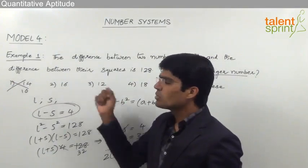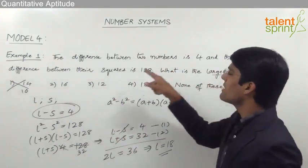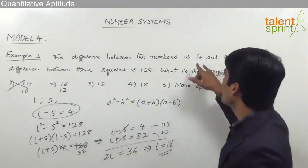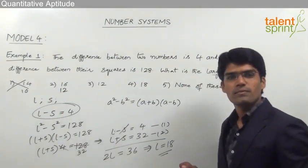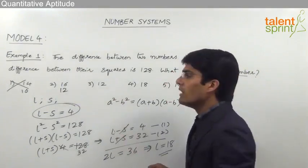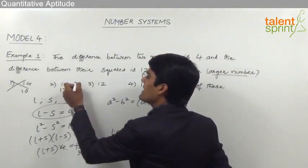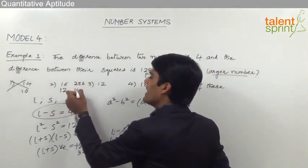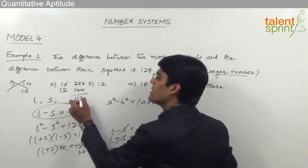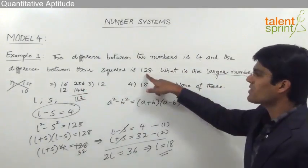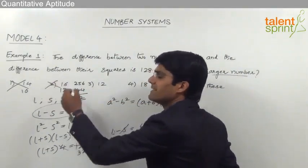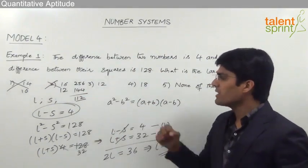For option 2, the larger number is 16, so the smaller is 12. 16² = 256 and 12² = 144; the difference is 112. But we need a difference of 128, so option 2 also gets eliminated.